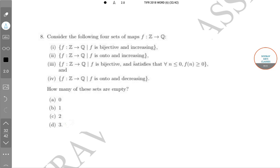Option 3: the mapping F is bijective and satisfies for all n ≤ 0, F(n) ≥ 0. Option 4: F is onto and decreasing. How many of these sets are empty?